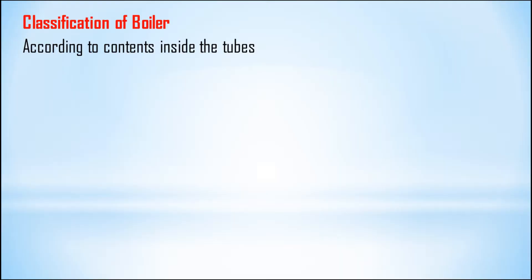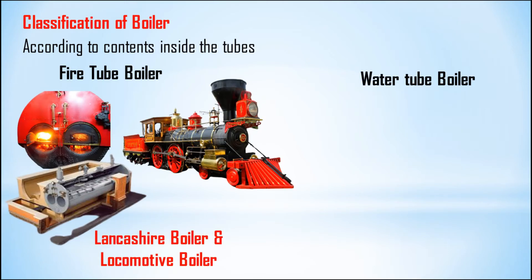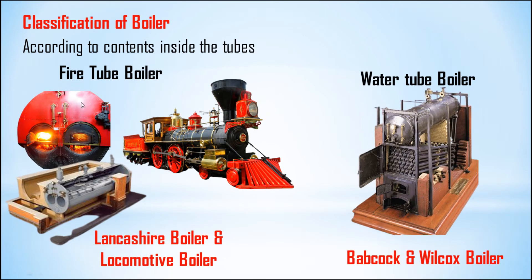Now we will classify the boiler. We can classify the boiler according to the contents inside the tubes. According to the contents, we can classify boilers as fire tube boilers and water tube boilers. Inside the tubes, if combustion takes place — or we can say flue gases are there — it is called a fire tube boiler. If water is inside the tubes, it is called a water tube boiler.